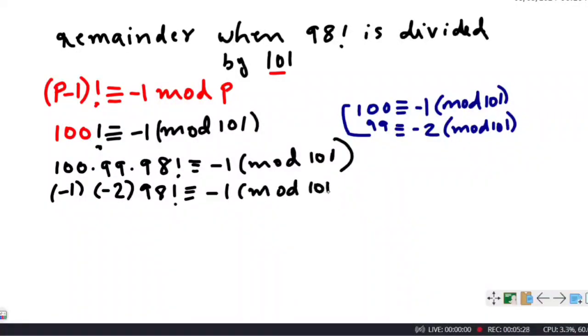We will get (-1) × (-2) × 98 factorial congruent to -1 mod 101. This simplifies to 2 × 98 factorial congruent to 100 mod 101.